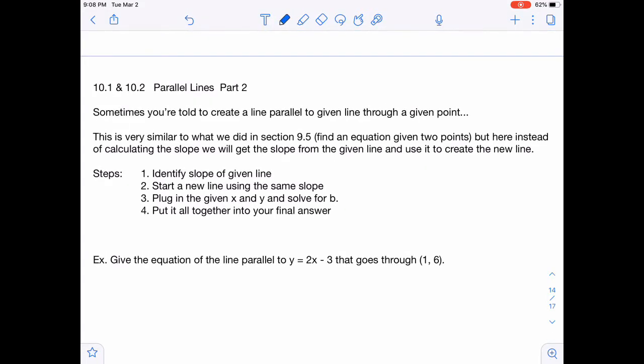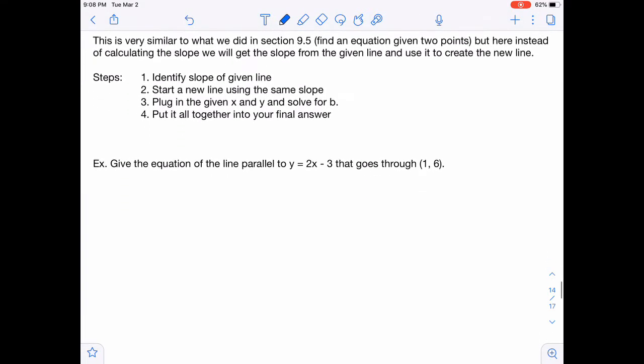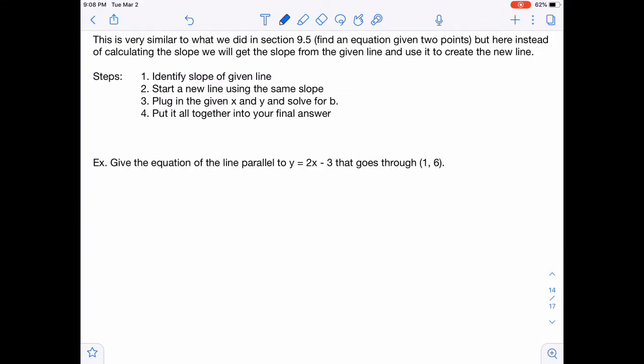So let's go through that with this example. Here we're given the equation y equals 2x minus 3, and we're told to create a new line that's parallel to that, that goes through the point 1, 6. So our first step is to identify the slope of our given line, and that would be 2, because it's in the m slot. In a y equals mx plus b, that's where the slope is, the m. So our m is 2.